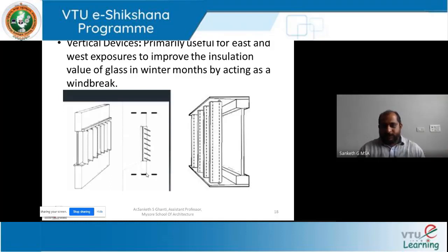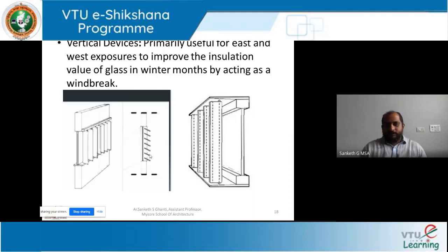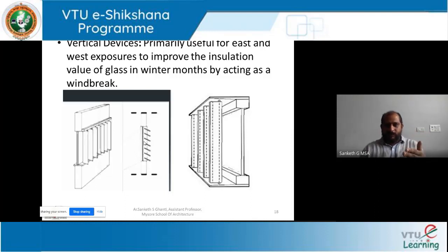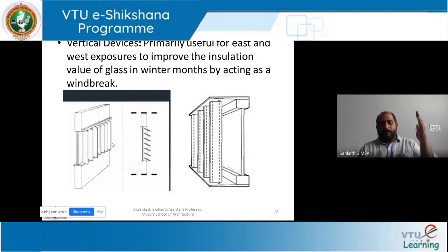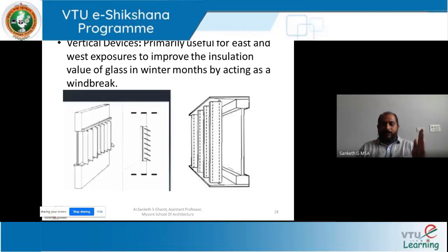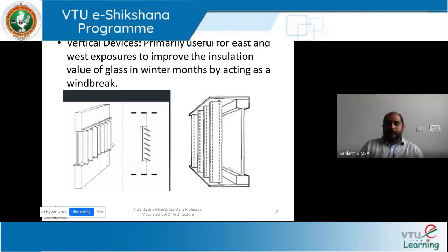The second type is vertical shading devices, called fins or vertical louvres. You can see a window with vertical shading devices or fins, and in the plan view you can see the same vertical shading devices in plan. You can have a desired angle - based on the solar angle or sun path, you can adjust your louvres to cut particular sunlight and allow wind direction. They can use adjustable wooden panels or concrete panels that can be pivoted. They can be fixed or be part of the building orientation or building massing, acting as a vertical shading device.